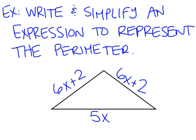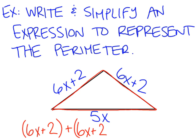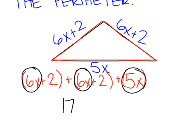Next we're going to look at an application — a geometry example. We have a picture of a triangle. Write and simplify an expression to represent the perimeter. Perimeter means add up all of the sides going all the way around the figure. So: 6x plus 2, plus 6x plus 2, plus 5x. Combining like terms: 6x plus 6x plus 5x is 17x, and 2 plus 2 is 4. So 17x plus 4 is the expression representing the perimeter of the triangle.